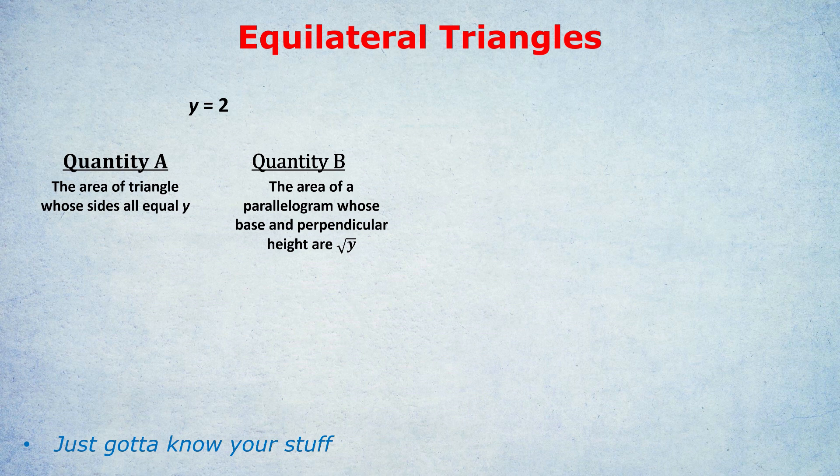All it says is y = 2, and then quantity A is the area of a triangle whose sides all equal y. So this triangle has sides of 2, 2, and 2. They all equal y.